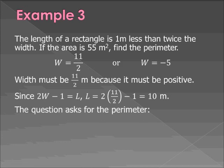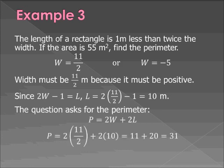So the question asks for the perimeter. Remember, find out what the question is asking for. So the perimeter of a rectangle is 2 times the width plus 2 times the length. Plug in 11 halves for W. Plug in 10 for L. And you get the perimeter is 31 meters.